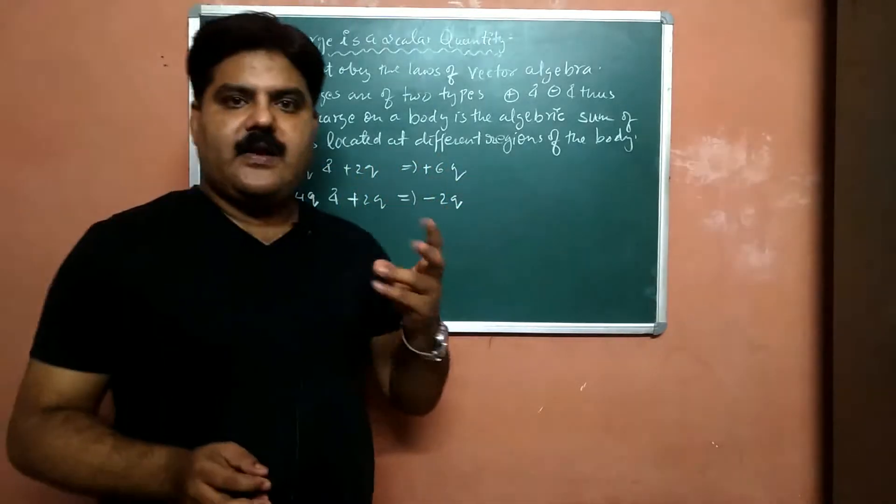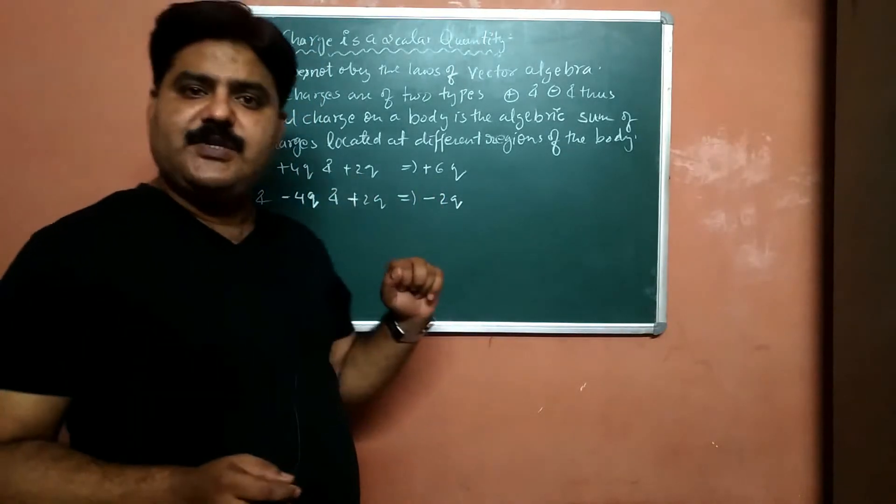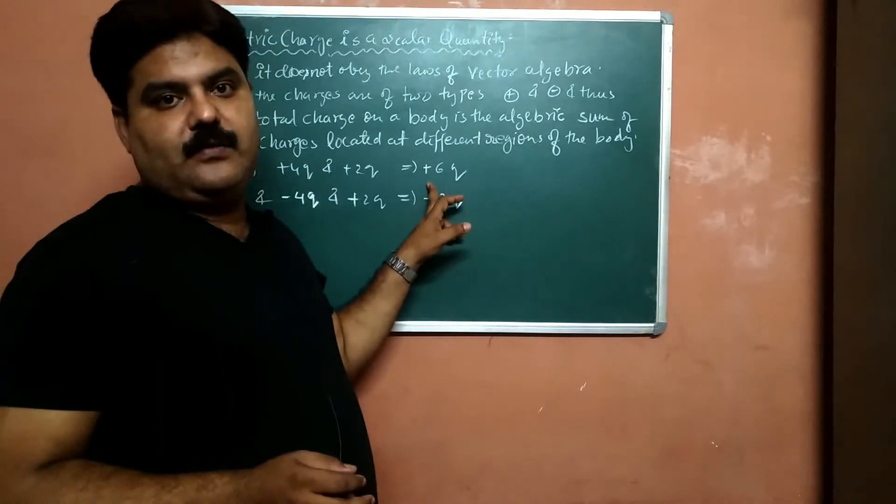If there are 2 charges located on the body, one is plus 4q and another is plus 2q, then the net charge on the body is plus 6q.